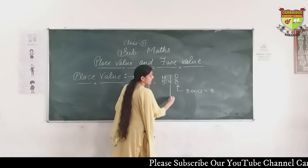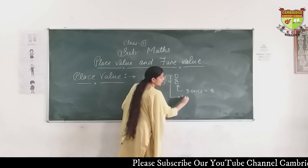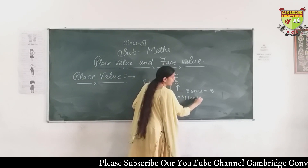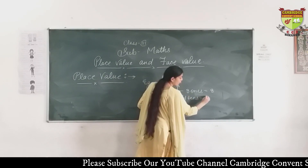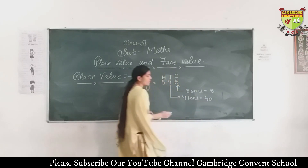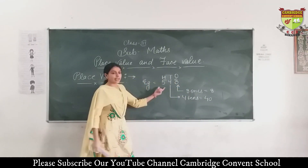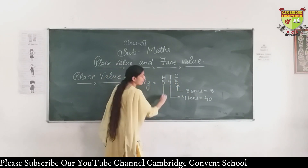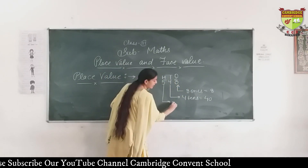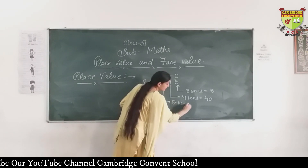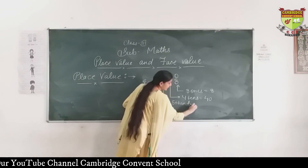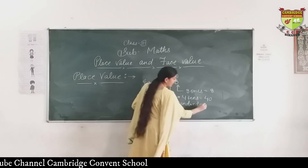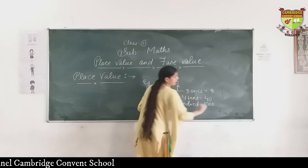The place of 4 is in 10's, so the place value of 4 is 40. The place of 5 is in 100's, so the place value of 5 is 500.